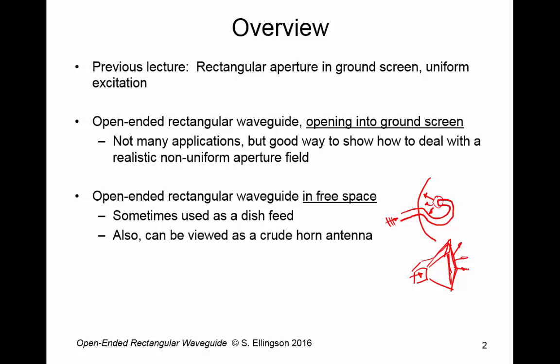You can think of this problem as the crudest possible horn antenna. In other words, it's one where you just have that waveguide and no flare. Or alternatively, you can think of it as a horn whose flare angle, this angle here, is zero. So we're starting to apply aperture theory to antennas that are possibly encountered in practice.